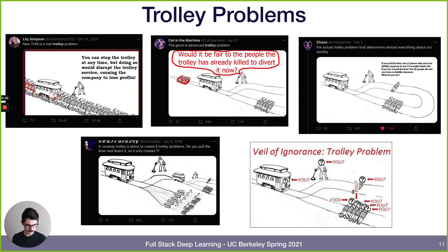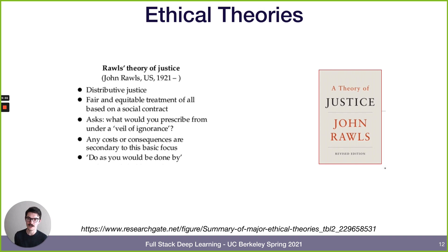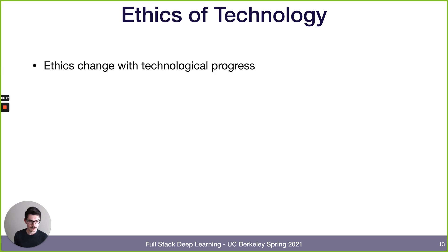In the trolley problem, it's always assumed you're the person pulling the lever. But what if you didn't know which person you were? This is called the veil of ignorance, and it leads to John Rawls's theory of justice. The thought experiment: if you were reborn into your society but into a random life, would you consider the society fair? We should try to improve society such that from behind the veil of ignorance, we'd be happy to be any random person in it.